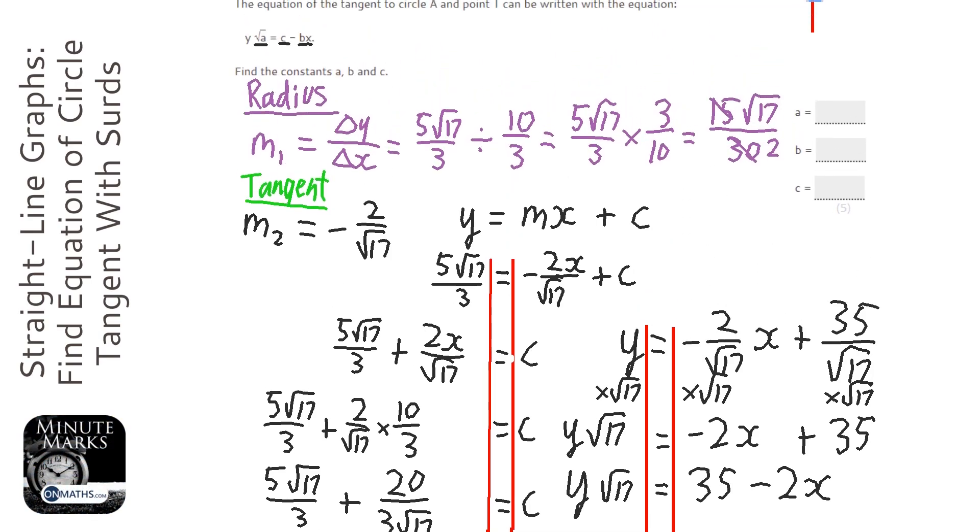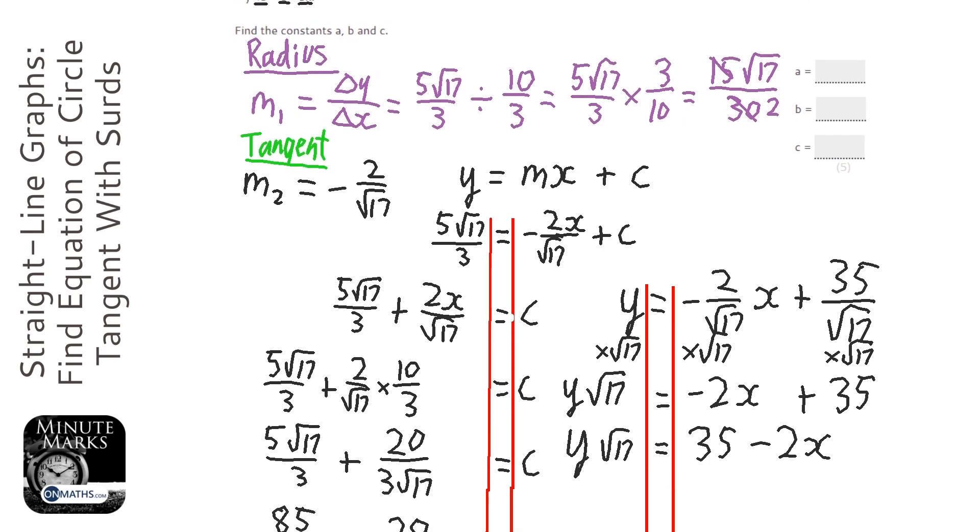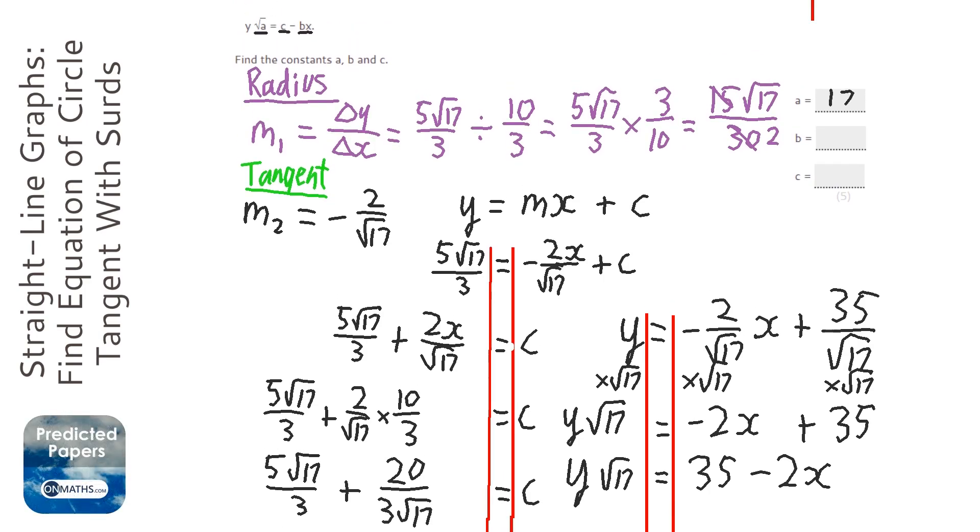So, looking back at the question, A will be what's in the root, which will be 17. C will be the number on its own, so c, which is 35. And the B will be the coefficient of the x. Now, technically, because it's got a minus in there, B is 2. But in the exam, I can imagine if you wrote minus 2, it depends, really. I mean, technically, B should be positive 2, because it has a minus in this bit here. But if you've got this far, I think that would be harsh than take away marks for that.